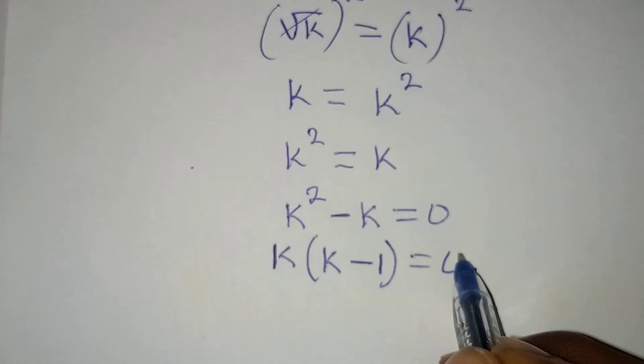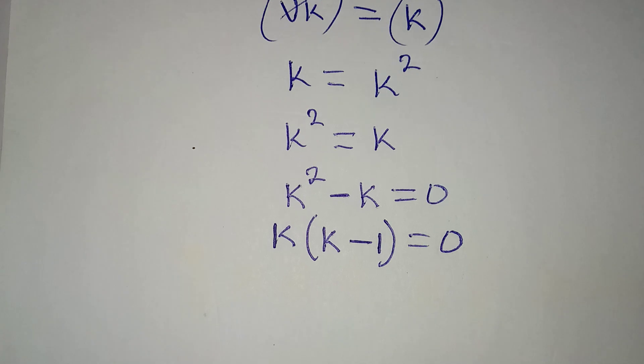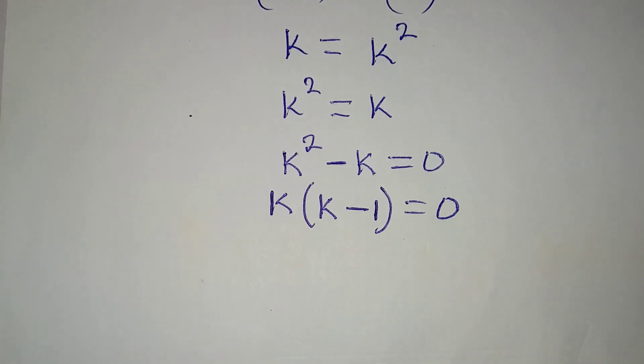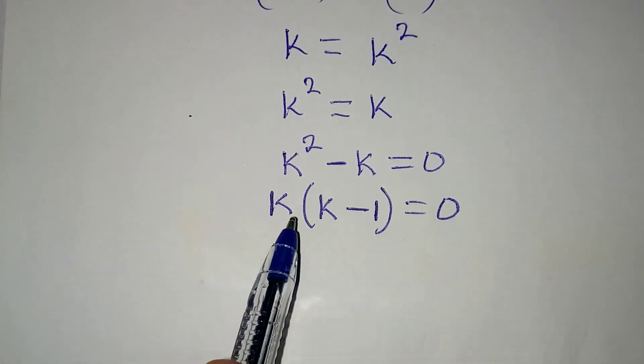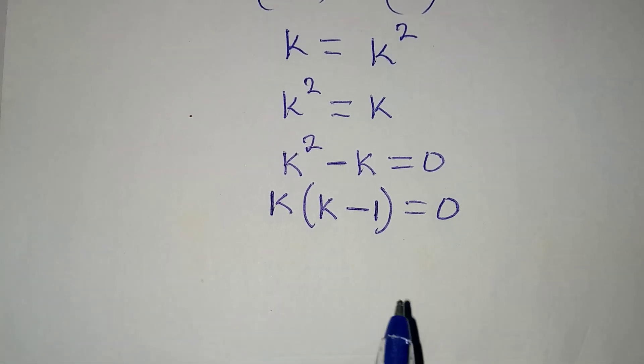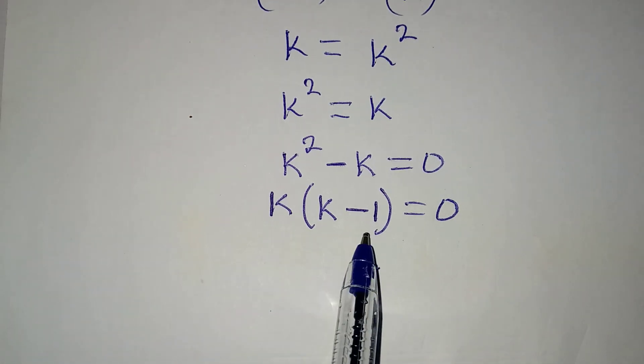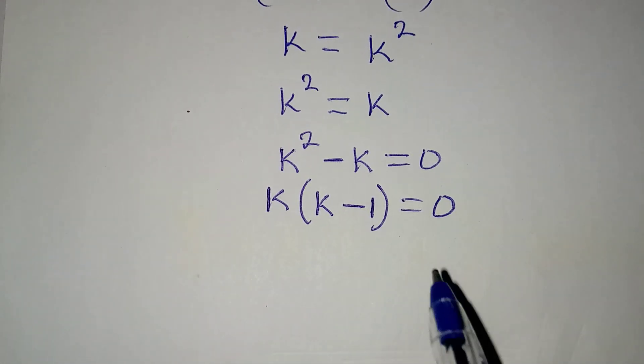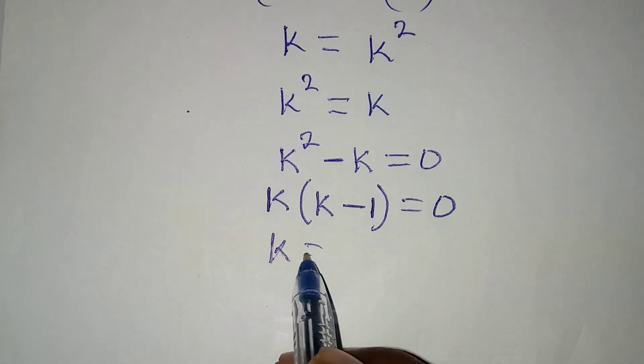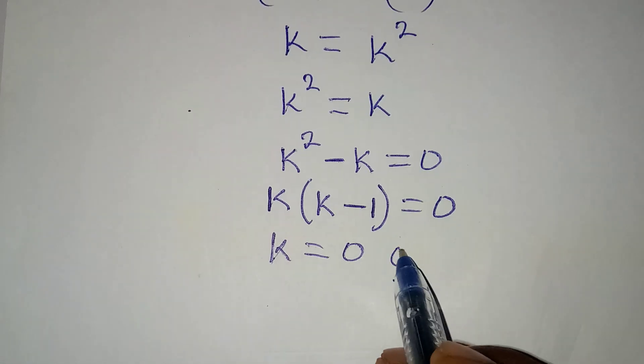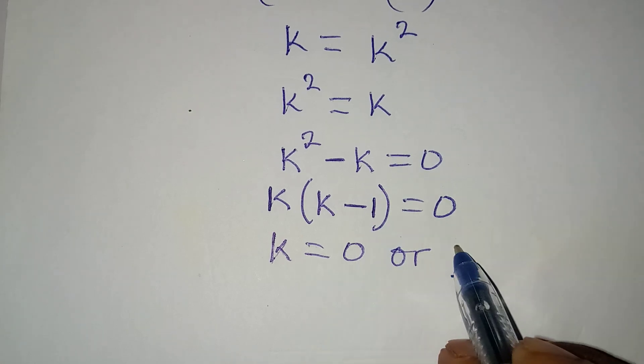And this is equal to zero. From here we apply zero product rule that says it's either one of them is equal to zero or both of them are equal to zero, because zero times zero will still give zero.